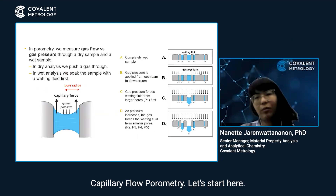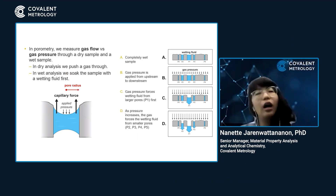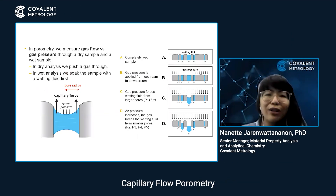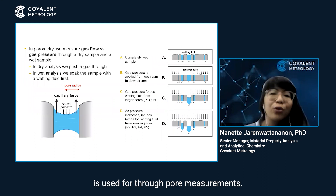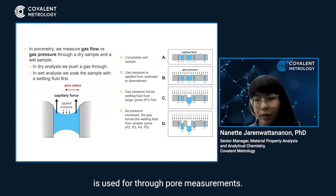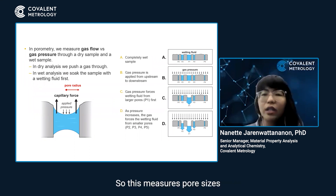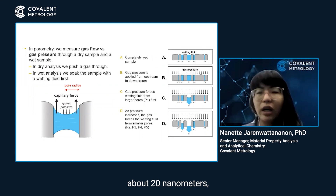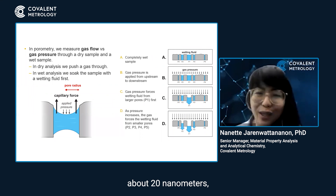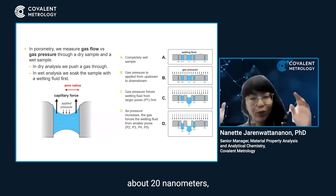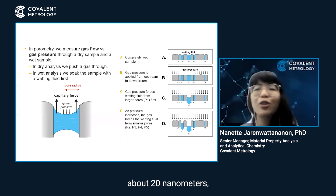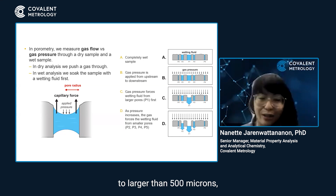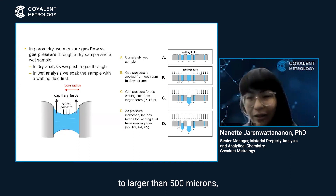Capillary flow porometry is used for through pore measurements. This measures pore sizes from 20 nanometers to larger than 500 microns.